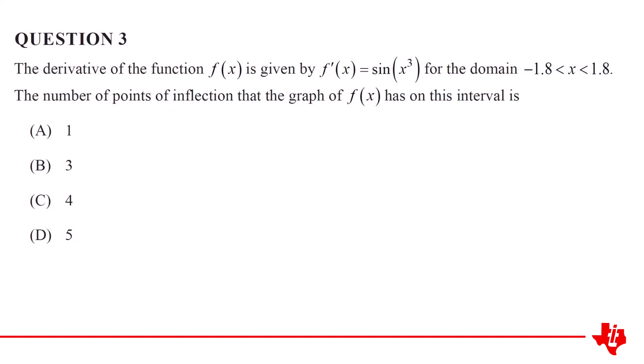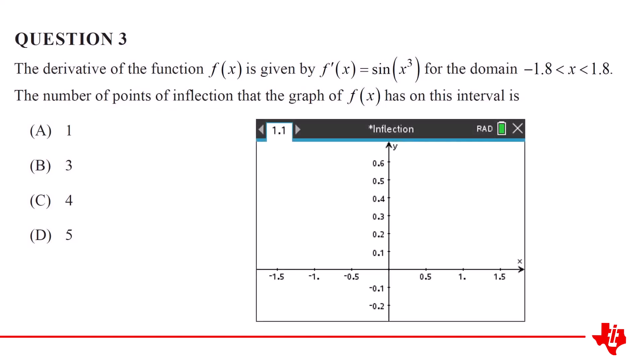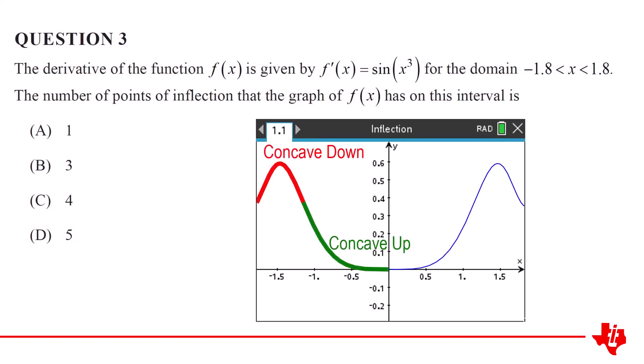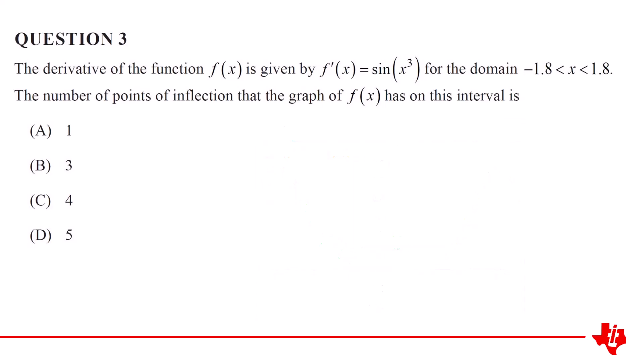Perhaps the most familiar way to identify points of inflection is to simply look at the graph and locate points where the curvature changes. In this question, we're not provided with the original function. Instead, we're provided with the derivative. You might naturally attempt to determine the original function; however, that's not so easy for this question. We therefore find ourselves in a less familiar environment.